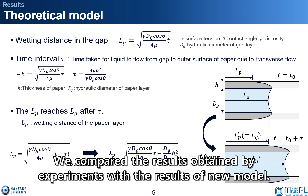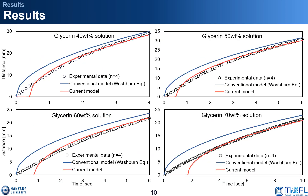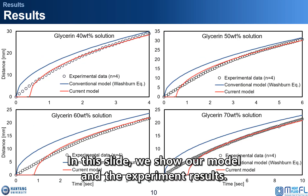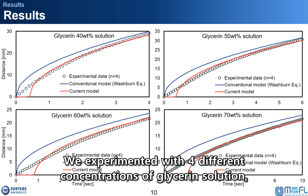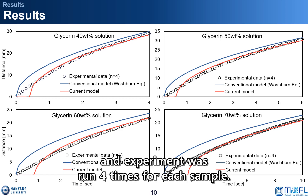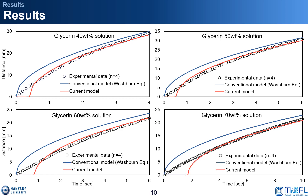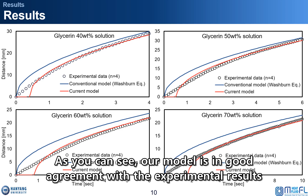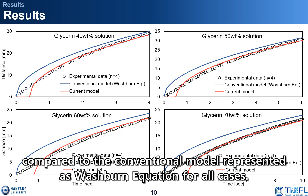We compared the results obtained by experiments with the results of our new model. We experimented with 4 different concentrations of glycerol solution, and each experiment was run 4 times per sample. As you can see, our model is in good agreement with the experimental results compared to the conventional model, represented as the Washburn equation, for all cases.